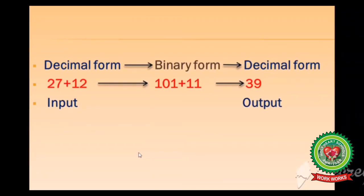Let's see an example. Here I have taken 27 plus 12, and this is my input in decimal form. After entering data, the computer will convert this decimal form into binary form so that the computer can understand this data and give the output. After processing in binary form, the computer will again convert the binary form into decimal form for showing the output on the screen, so that the user can understand it easily.